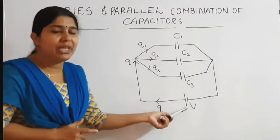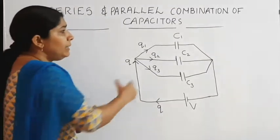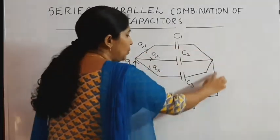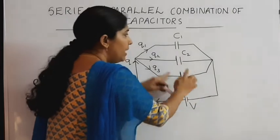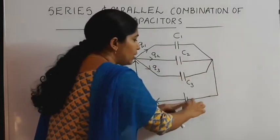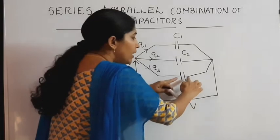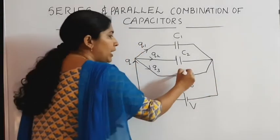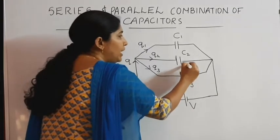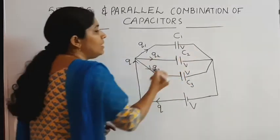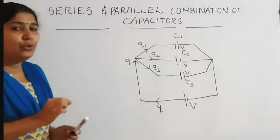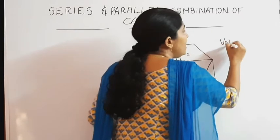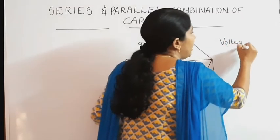What about the voltage? The terminals of C1, C2, and C3 are all connected to the same voltage source V. So the potential or voltage across each capacitor remains constant. Therefore, the most important point is: in parallel combination, voltage remains constant.